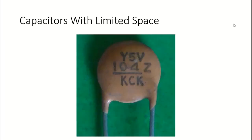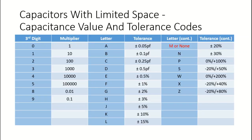When capacitors have a limited amount of space on them - like this ceramic capacitor here - many manufacturers put a code or codes on capacitors to tell the user what their characteristics are. So let's discuss some of these codes. First we'll look at the codes related to the capacitance value and the tolerance. If you remember the capacitor we were looking at before, in the middle there were three numbers and then a letter - those three numbers tell us the capacitance value and the tolerance.